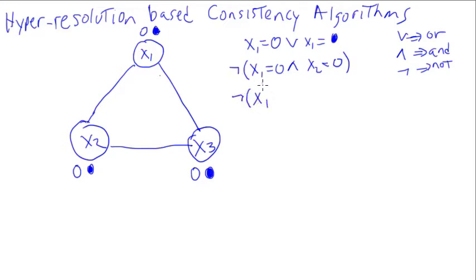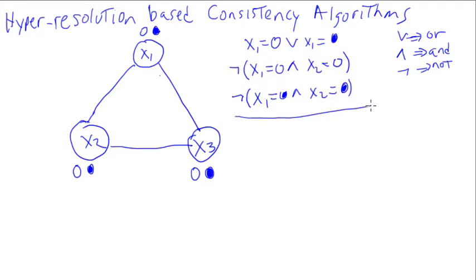It's also not true that x1 is blue and x2 is blue. So these three statements are true. There is a logic rule called the hyper-resolution rule that says when we have statements in this form, we can deduce new things — specifically, that x2 is white or x2 is blue, which is obviously true, but we can deduce it because of the structure of these statements.